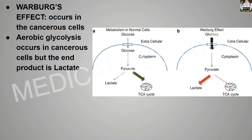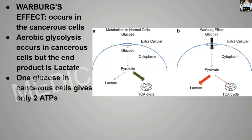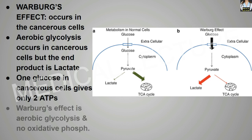The Warburg effect basically occurs in the cancerous cell where there is excess production of lactic acid. Aerobic glycolysis occurs in the cancerous cell but the end product is lactic acid. When glucose in the cancerous cell gives only 2 ATPs, because most of it goes into the lactic acid pathway and very little goes into the TCA cycle. The Warburg effect is aerobic glycolysis and no oxidative phosphorylation occurs.